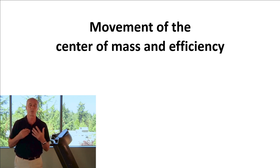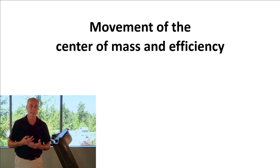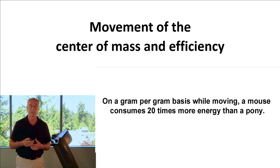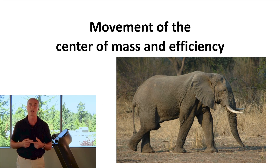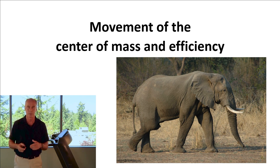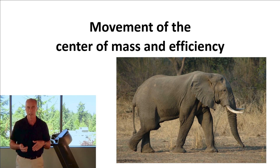This explains why, on a gram-per-gram basis, a mouse consumes 20 times more energy than a pony, and why elephants are so metabolically efficient — they keep their knees straight and use other motions to just moderately flatten the center of mass.